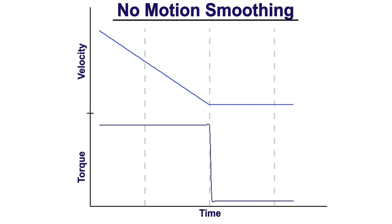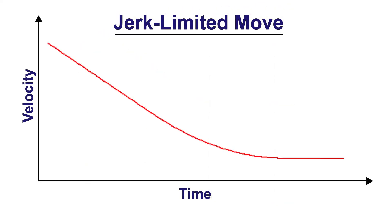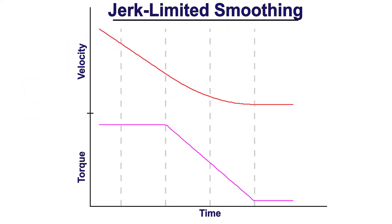With a standard trap move and no smoothing applied, the motion and torque response look very abrupt and rough - definitely not mechanically friendly. This is why most servo systems have some sort of smoothing algorithm, whether cosine smoothing or S-curving, to make the motion profile less abrupt. Let's look at the trapezoidal move with the first degree of smoothing, which is jerk-limited smoothing. Looking at the same point in the profile where we're going from deceleration to zero velocity, the motion profile itself looks much smoother. The corner before the endpoint is curved rather than sharp, but the proof is really going to be in the torque domain.